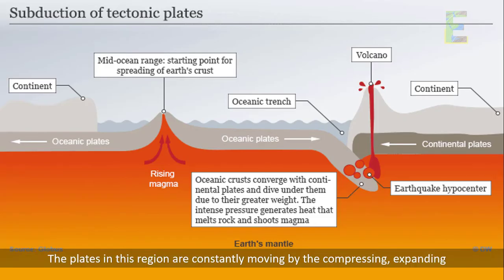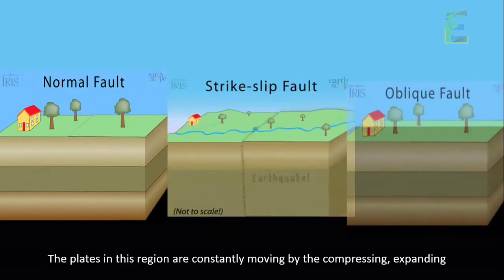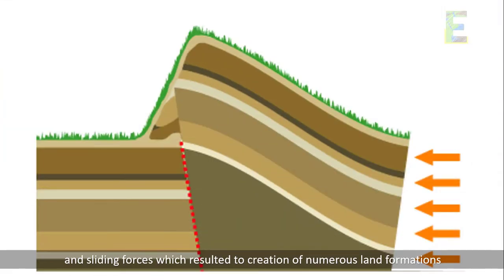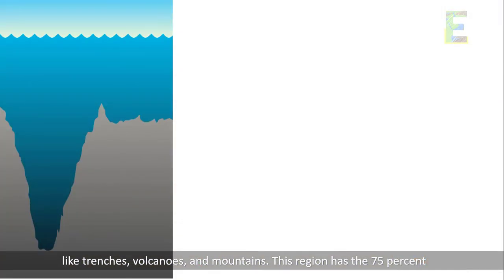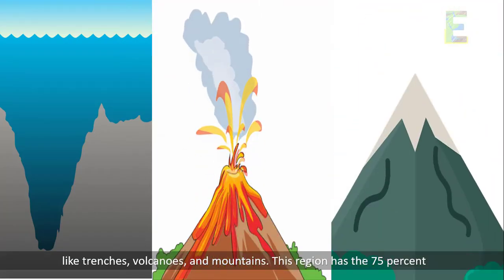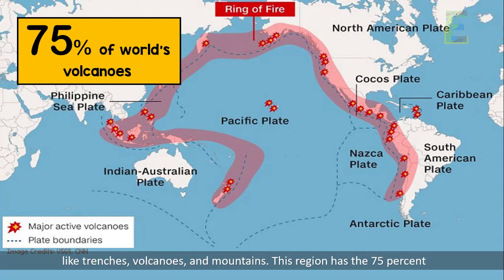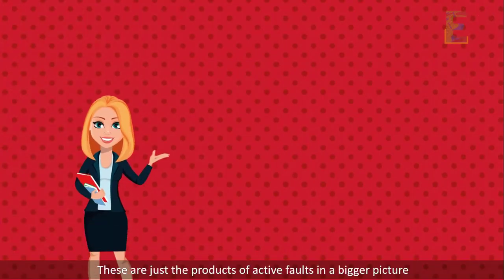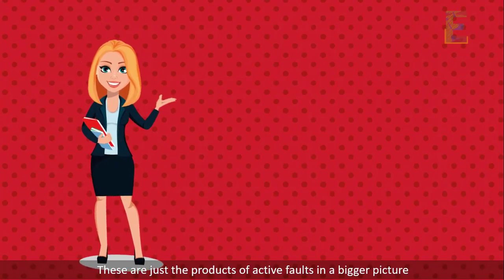The plates in this region are constantly moving by the compressing, expanding, and sliding forces, which resulted in the creation of numerous land formations like trenches, volcanoes, and mountains. This region has 75% of the world's volcanoes, which is more than 450 volcanoes. These are just the products of active faults in the bigger picture.